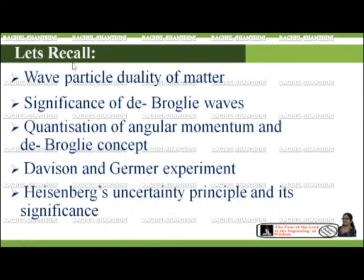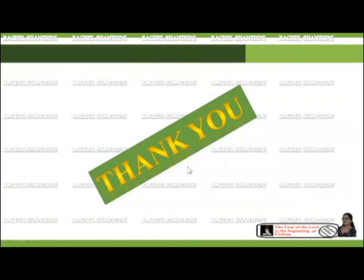Let's recall all the topics discussed in this session. We discussed wave-particle duality of matter, significance of de Broglie's waves, quantization of angular momentum and de Broglie's concept, the Davisson and Germer experiment, and Heisenberg's uncertainty principle and its significance. Hope this session was very useful to you. See you soon in the next session. Have a nice day. Thank you.